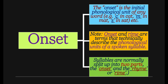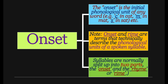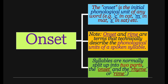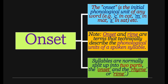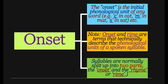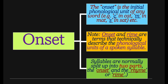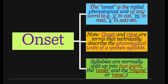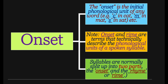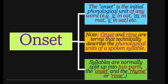The 'onset' is the initial phonological unit of any word. For example, 'c' in cat, 'm' in mat, 's' in sat. Onset means the beginning phonological unit of any word. In the word 'cat,' the sound 'c' comes initially, so 'c' is the onset. Likewise, 'm' is the onset of 'mat' and 's' is the onset of 'sat.' The onset is the initial phonological unit of any word.